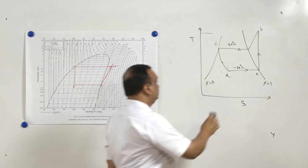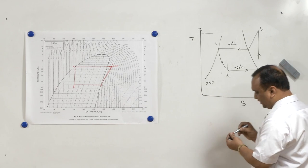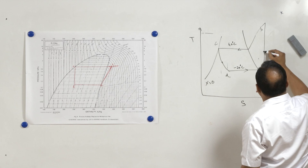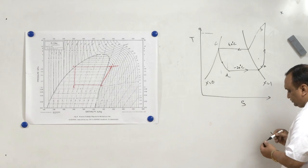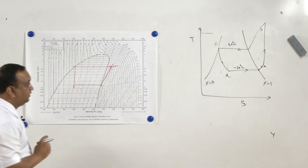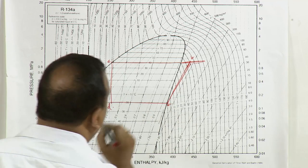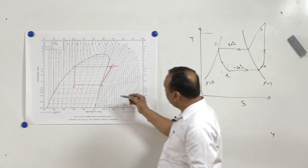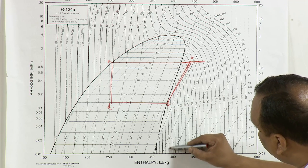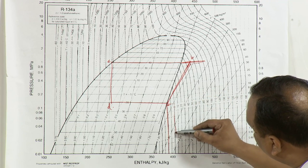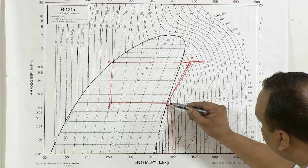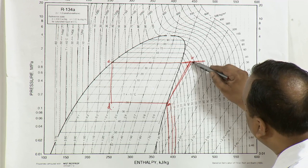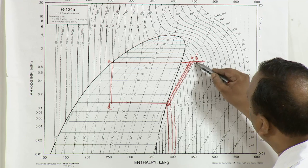If the vapor is superheated, points will be shifted. At a saturation temperature of -20°C, if the vapor is superheated by 5°C, point A is shifted to the right into the superheated region — we can read the enthalpy directly from the chart. Following the constant entropy line gives the shifted point B-dash in the superheated region at the higher pressure.